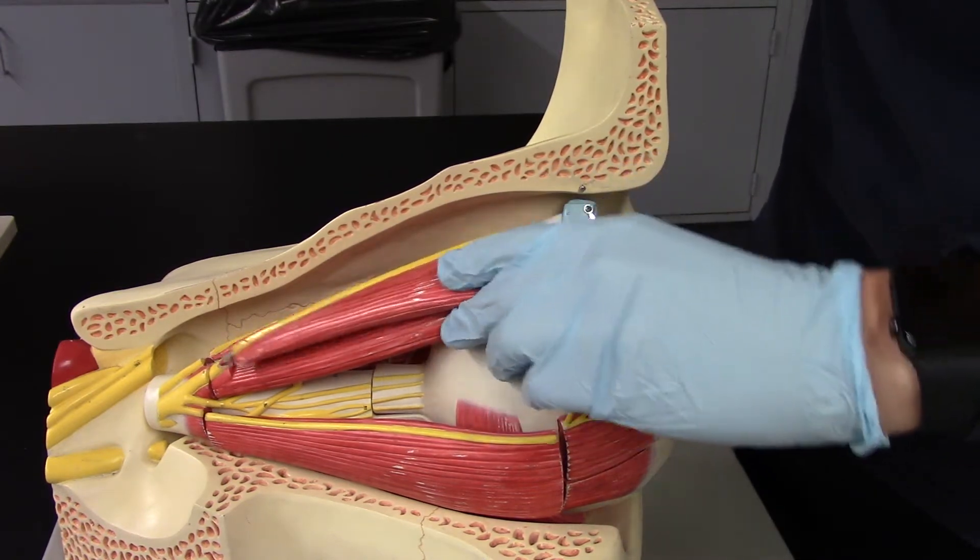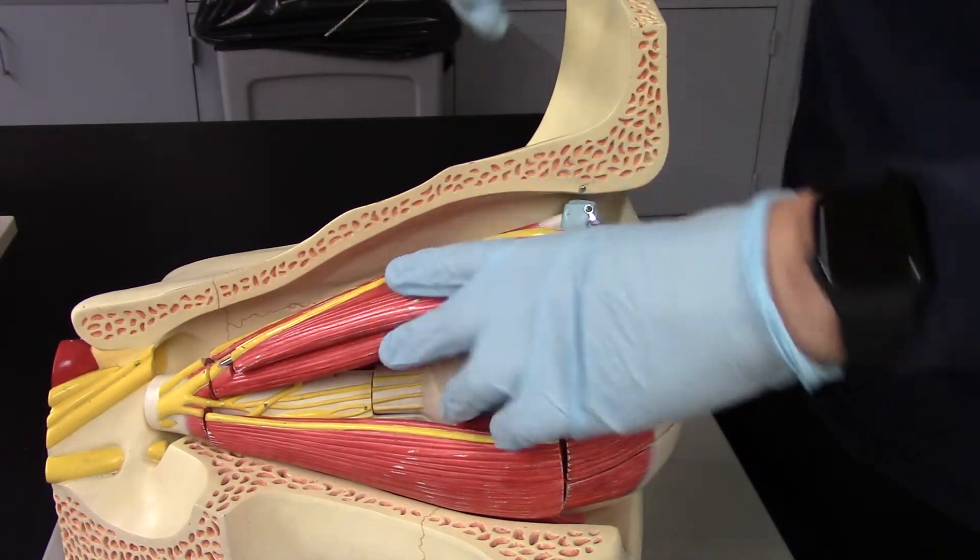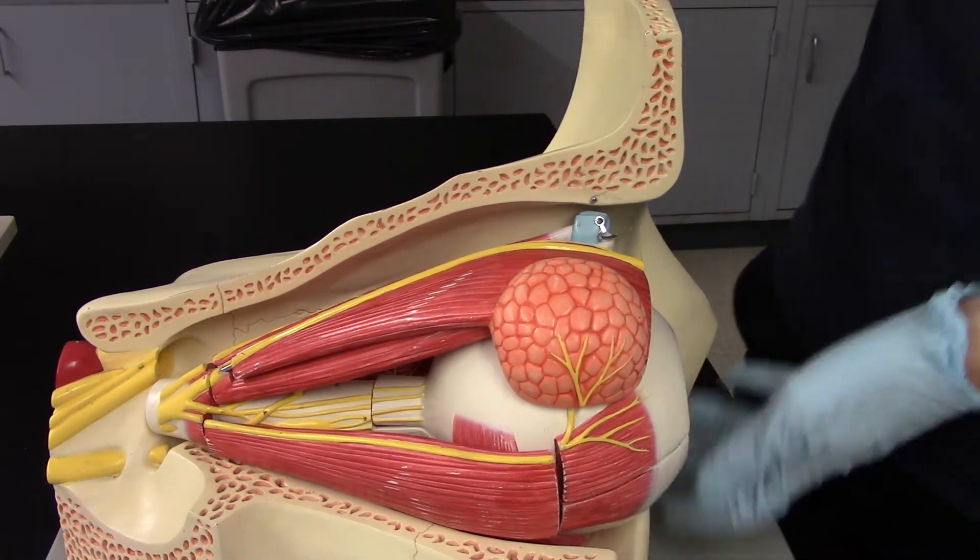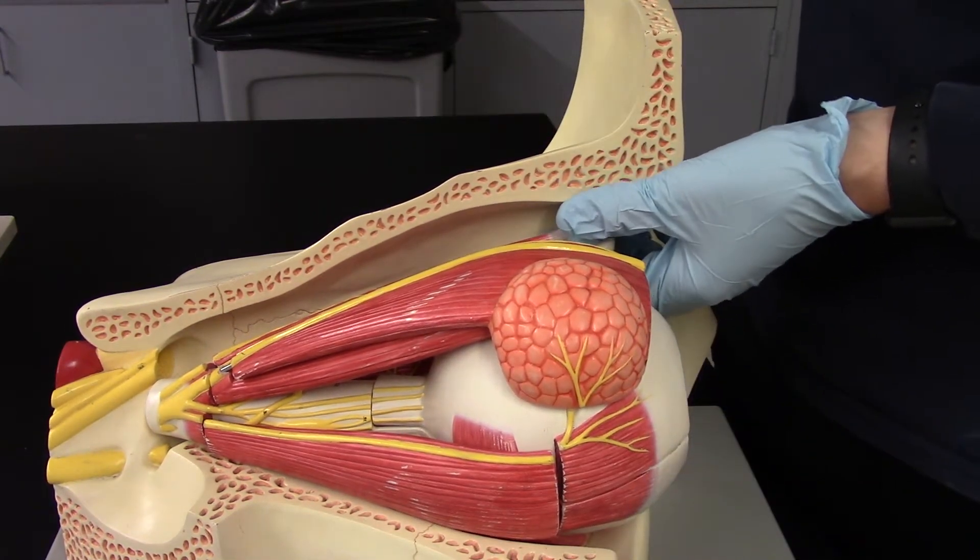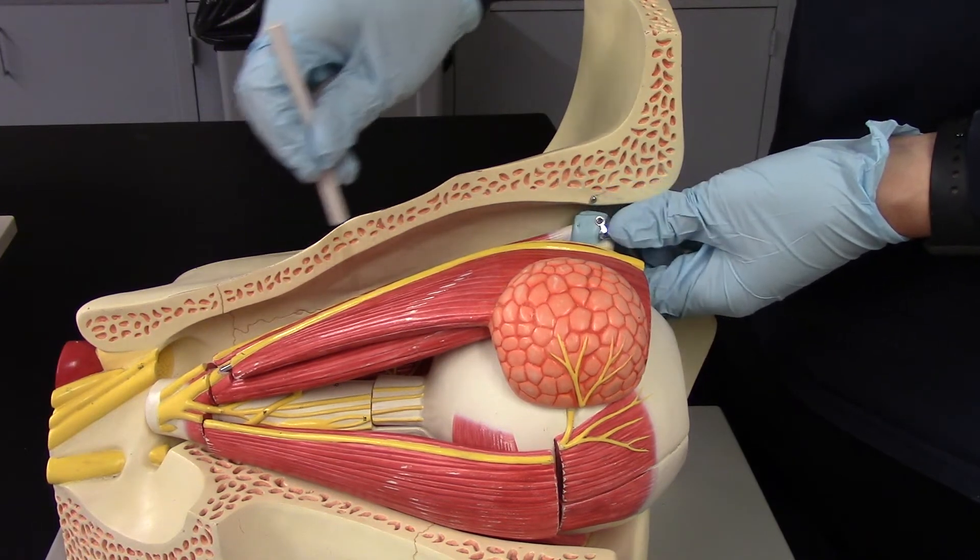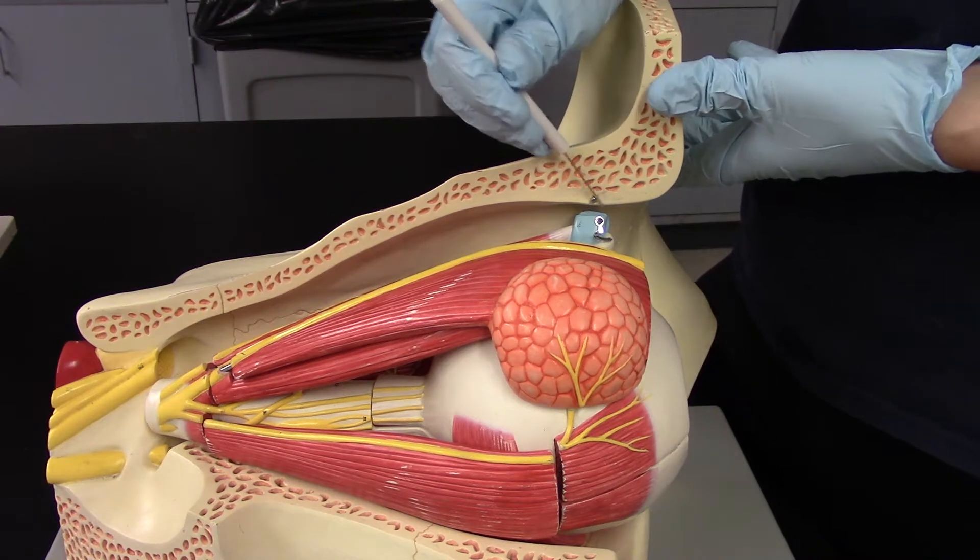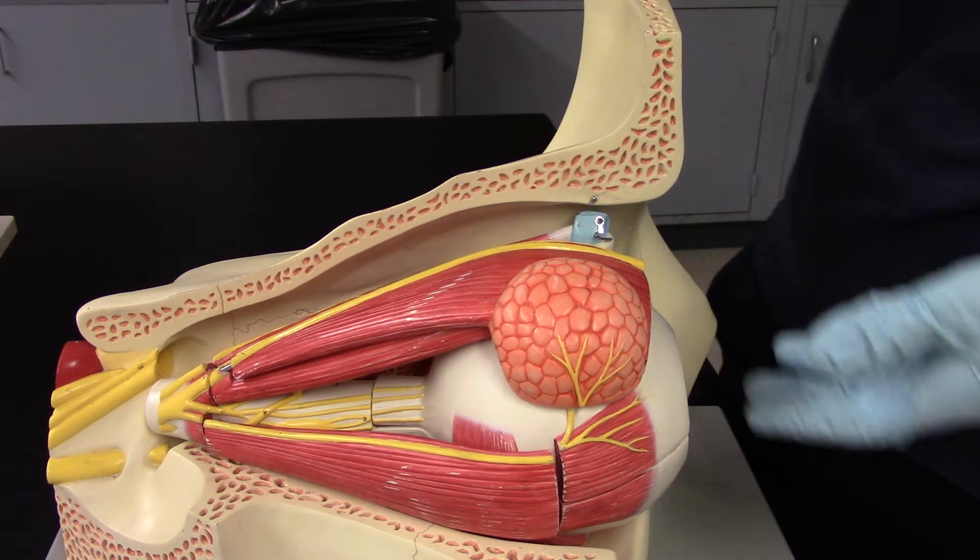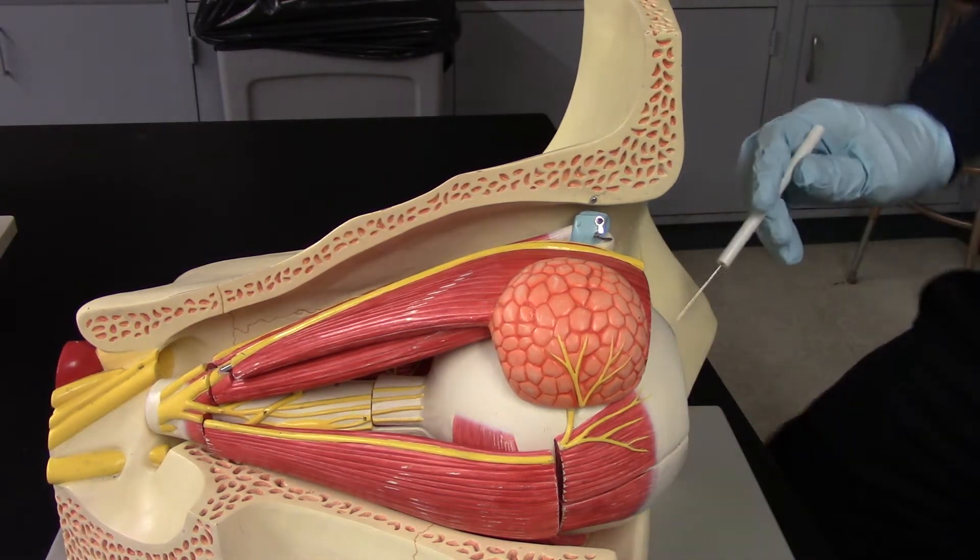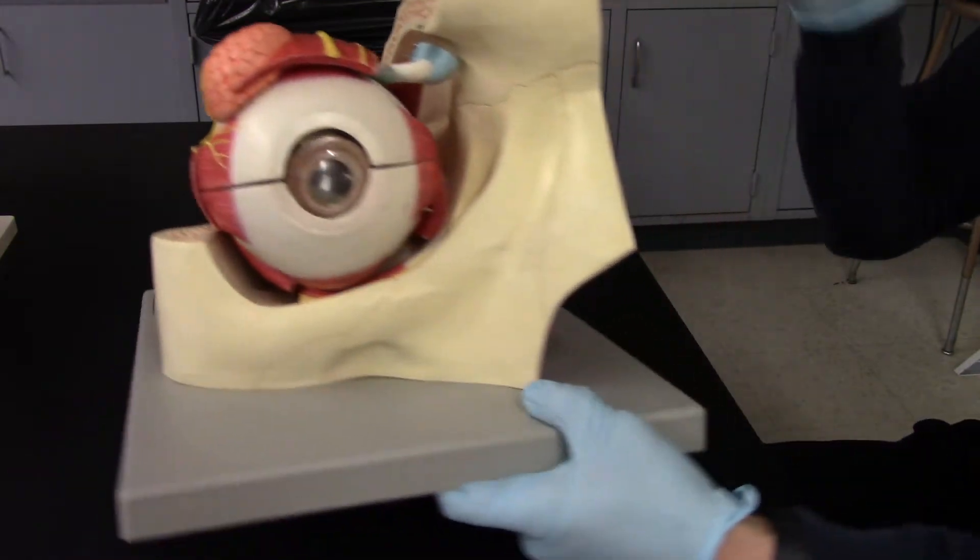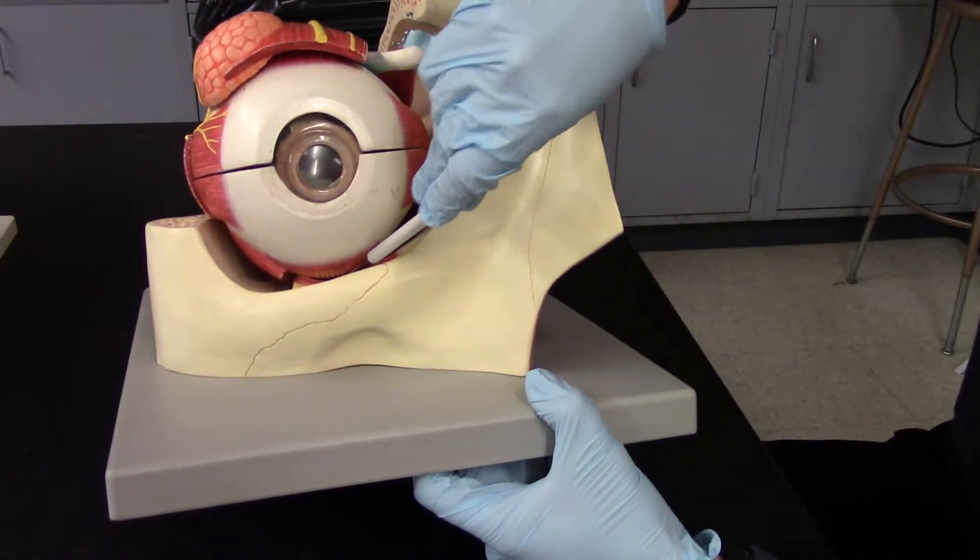Next up, we have the superior and inferior oblique muscles. First off, the superior oblique muscle is going to be right here. It's connected to the trochlea of your eye. And then your inferior oblique muscle is going to be on the bottom. And it kind of wraps down and around.